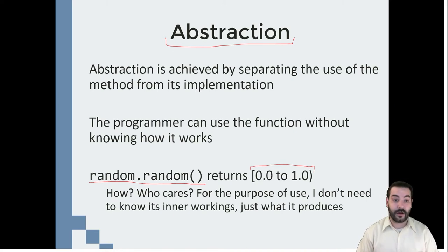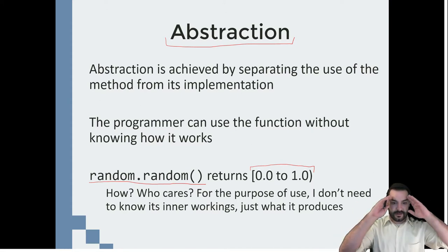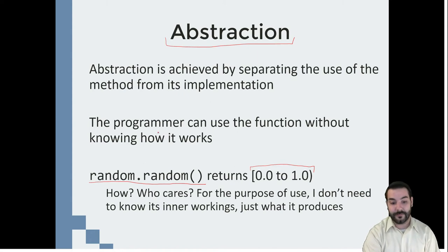How? Who cares? Yeah, you can research it, cool, awesome. But for the purpose of my program, I don't care how you do what you do. I don't care how random.random works, I don't care how random.int works. I don't care if math.pow chooses to do a multiplication double asterisk version or if it chooses to use a loop to do its calculation. I don't care. I just understand all I need to know is this is the function that produces this effect.